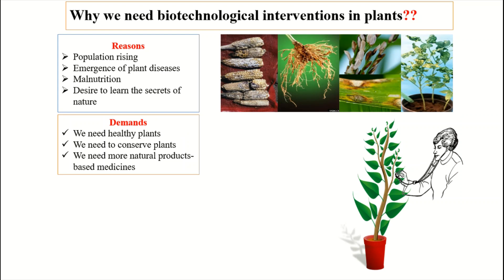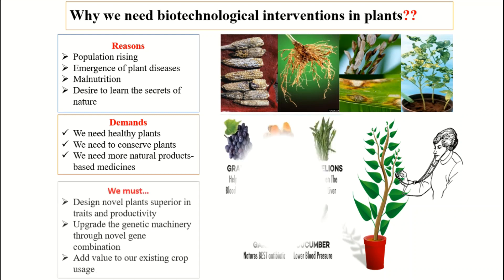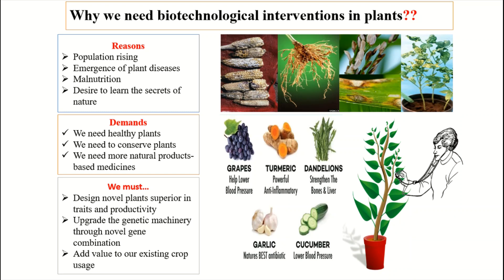What are the demands of society? Society needs healthy plants, disease-free plants, to conserve plant diversity, and we also need more natural products and medicines as compared to synthetic products. For this purpose, we must design novel plants which are superior in characters and productivity — that is, yield per unit area or production per unit area.